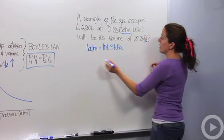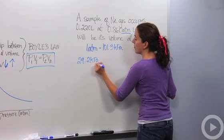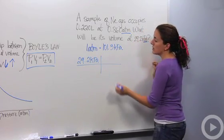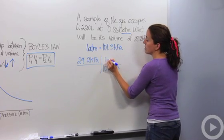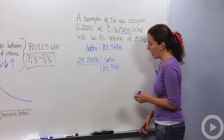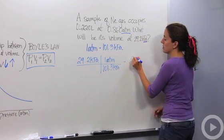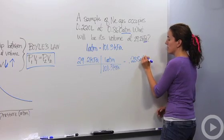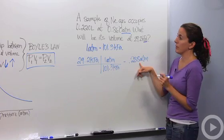I'm going to change 29.2 kilopascals to atmospheres. I know that 101.3 kilopascals equals one atmosphere. So 29.2 divided by 101.3 gives me 0.288 atmospheres. So instead of using the original number, I'm going to use this converted number.